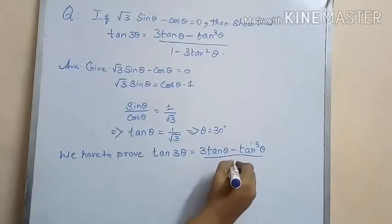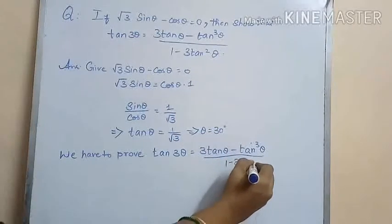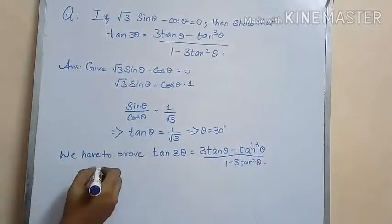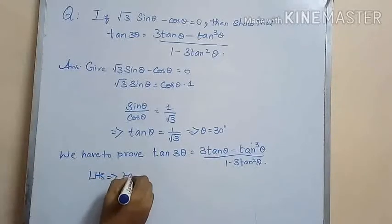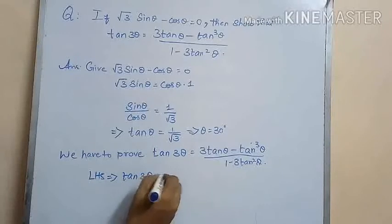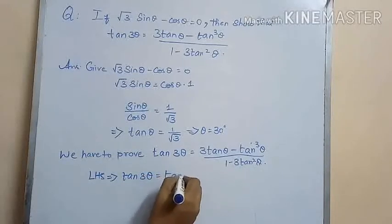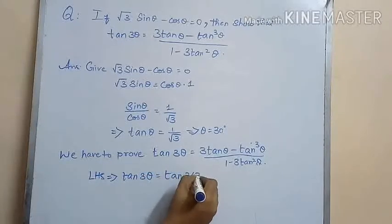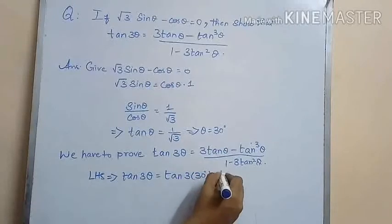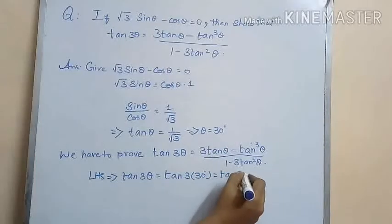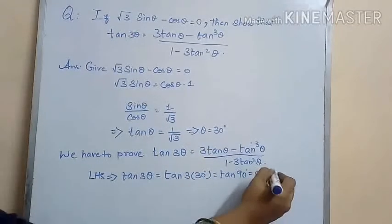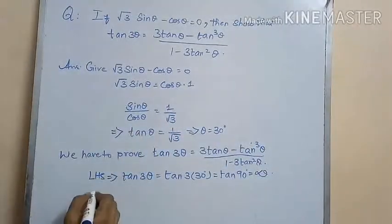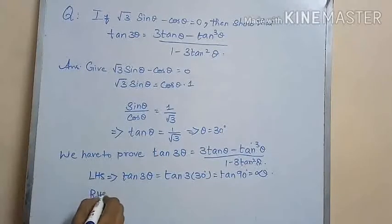Let us consider the LHS, which is tan 3θ = tan(3 × 30°) = tan 90°. From the table, we get the value of tan 90° as not defined.